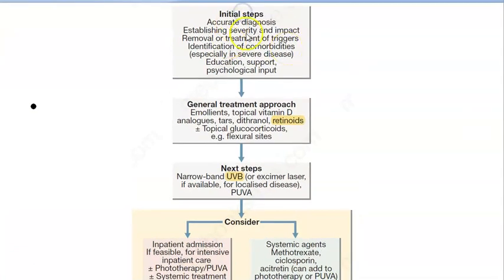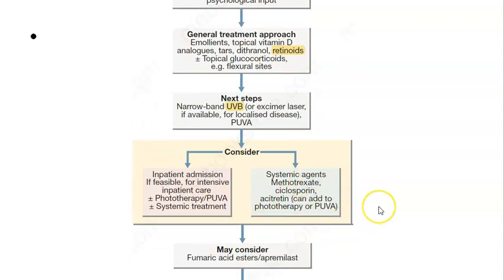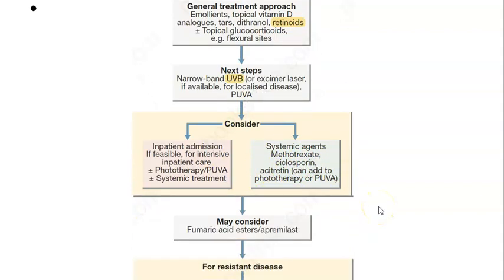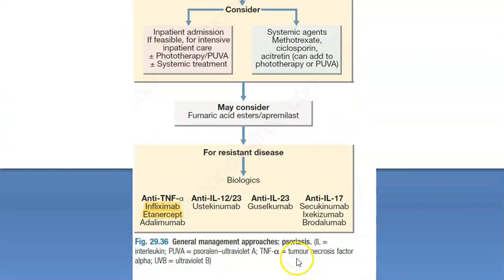To treat: remove the trigger that caused it, then give emollients, retinoids, vitamin D, and glucocorticoids. The next step is UVB light, then PUVA with UVA. Then consider systemic treatment with methotrexate, cyclosporine, fumaric acid esters, and finally infliximab or etanercept. This treatment is very similar to rheumatoid arthritis — infliximab, methotrexate, etc.